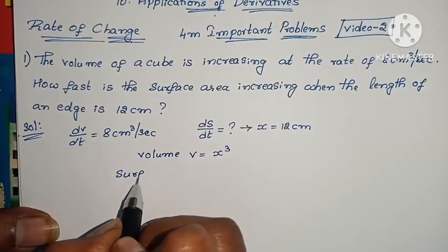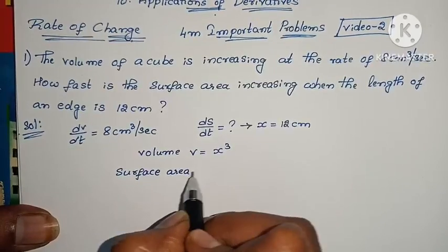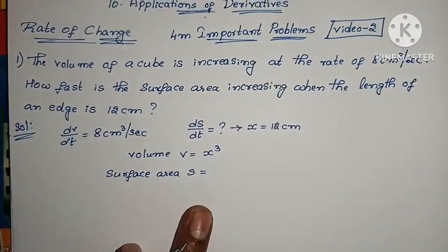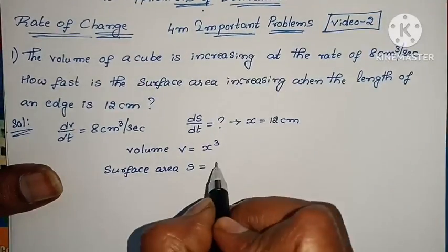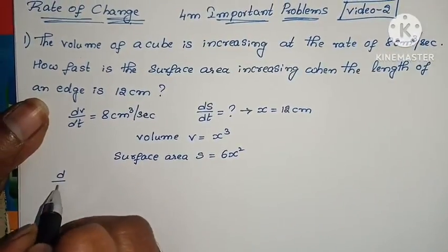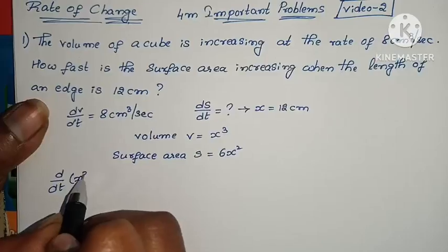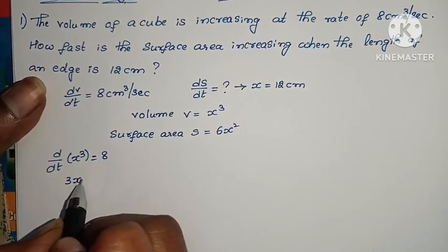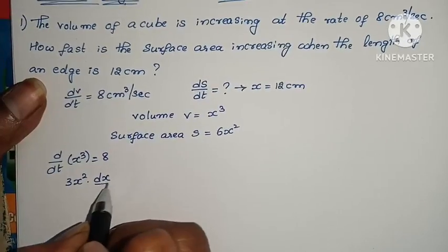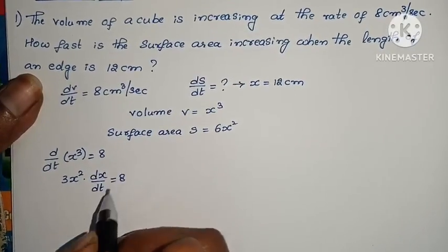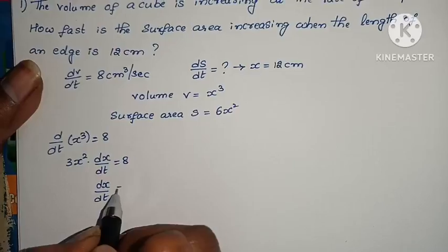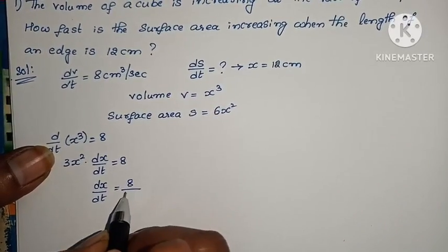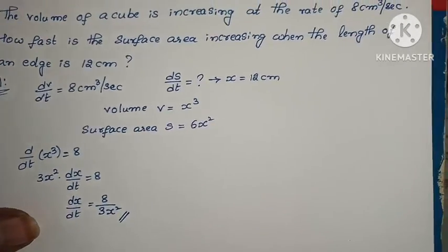Surface area of a cube, total surface area is 6x². Already d/dt of V, V is x³ equals 8. Now differentiate: 3x² into dx/dt equals 8. So dx/dt equals 8 divided by 3x².